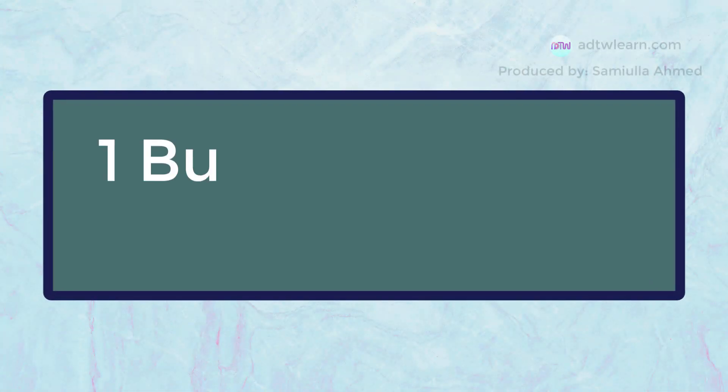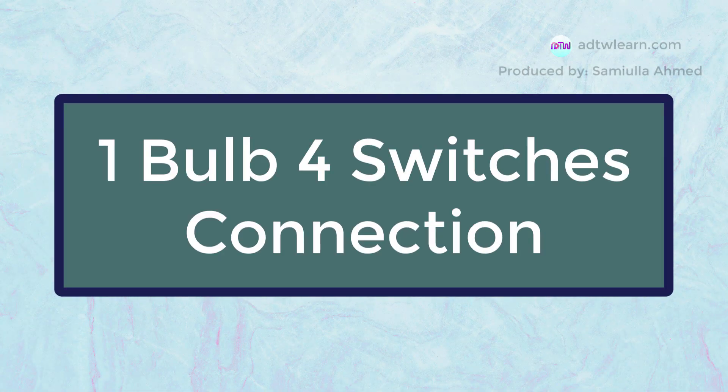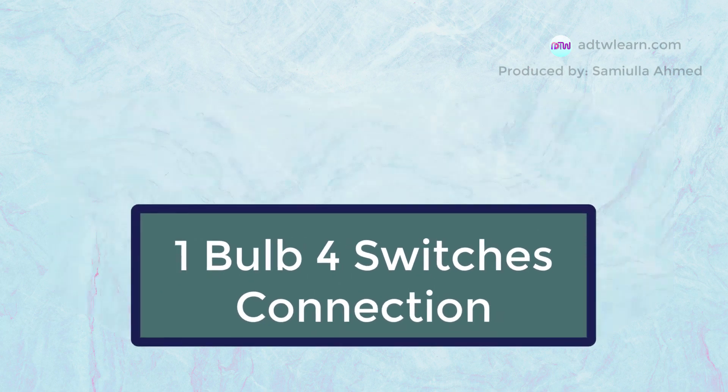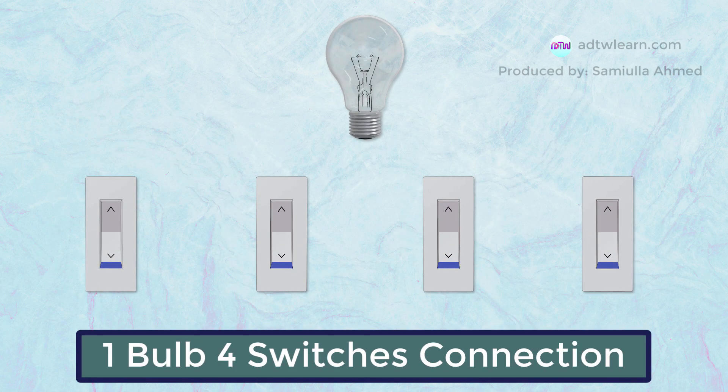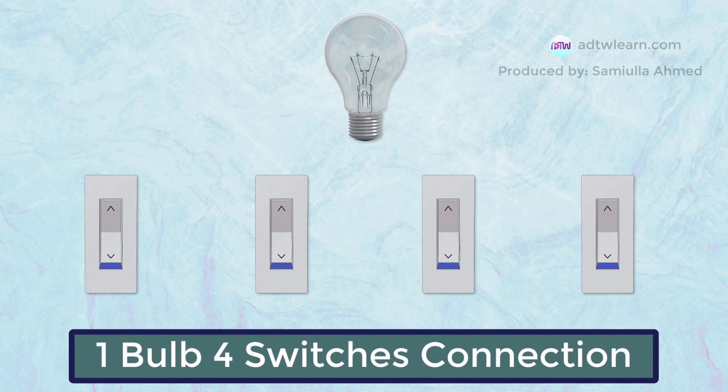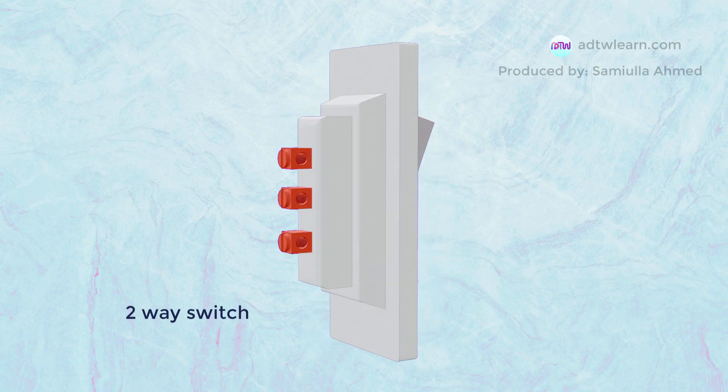In this video, we will see how to connect four switches to a single bulb. We will see how the wiring should be done for switching on or off a bulb. Here we are using two-way switches for this connection.